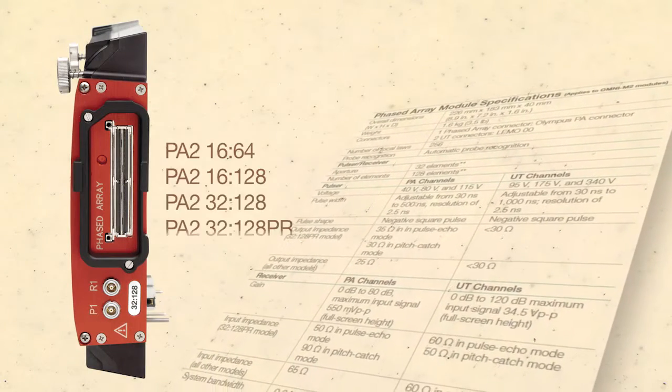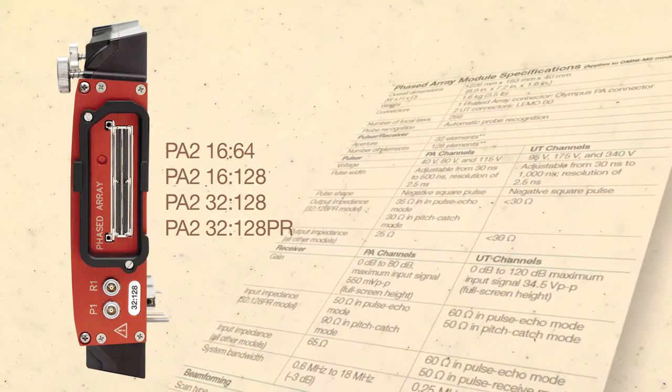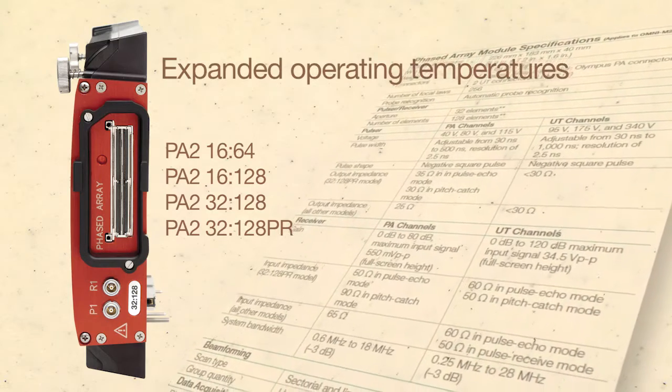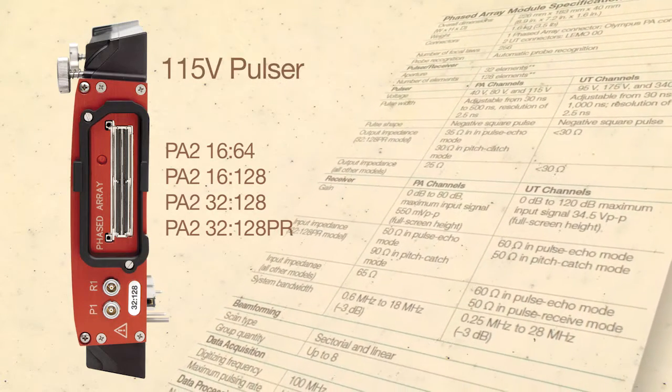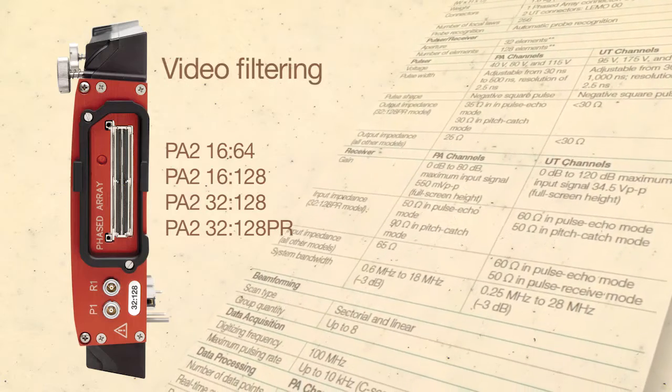Improvements in latest generation PA2 OmniScan modules include expanded operating temperatures, fanless design, 115-volt pulsar, and video filtering.